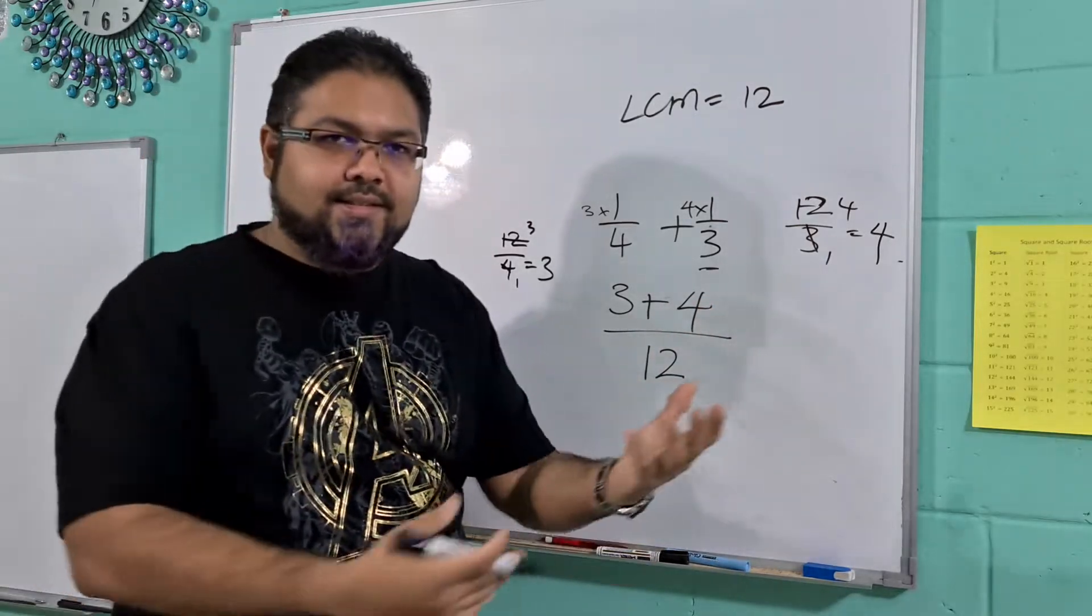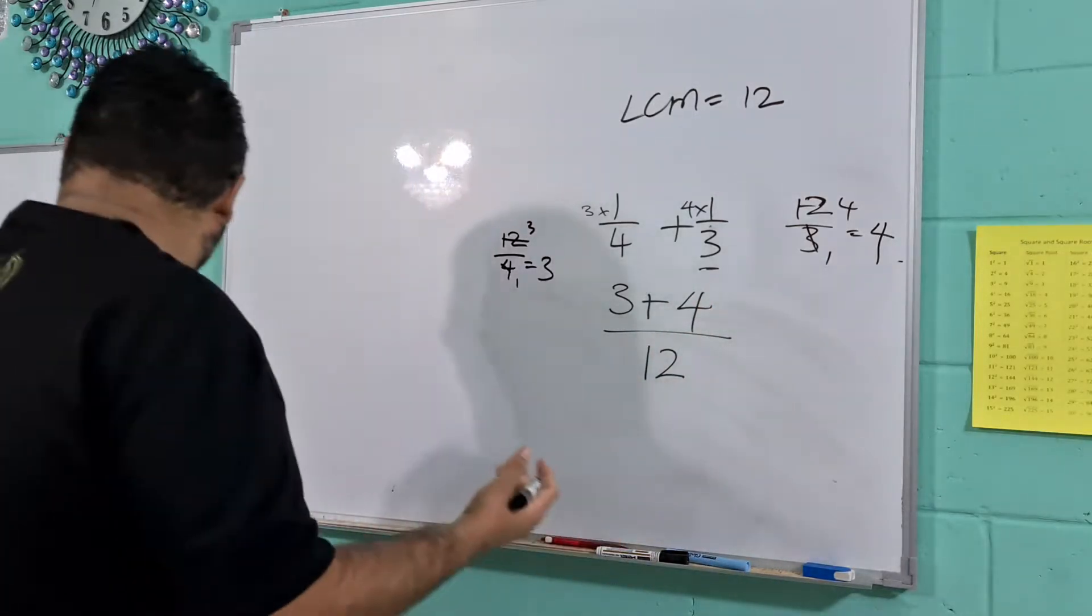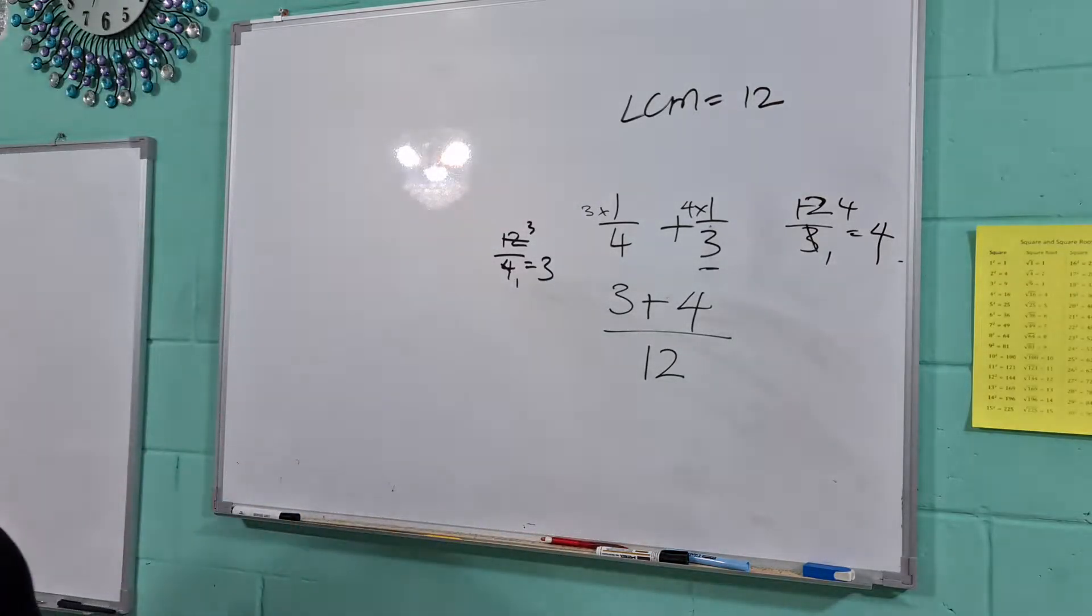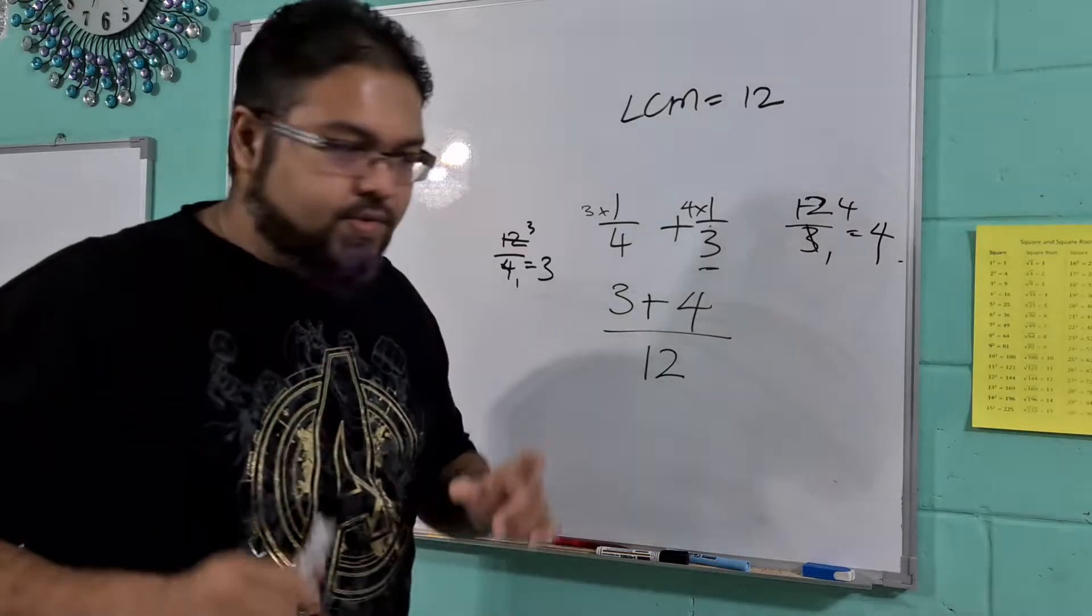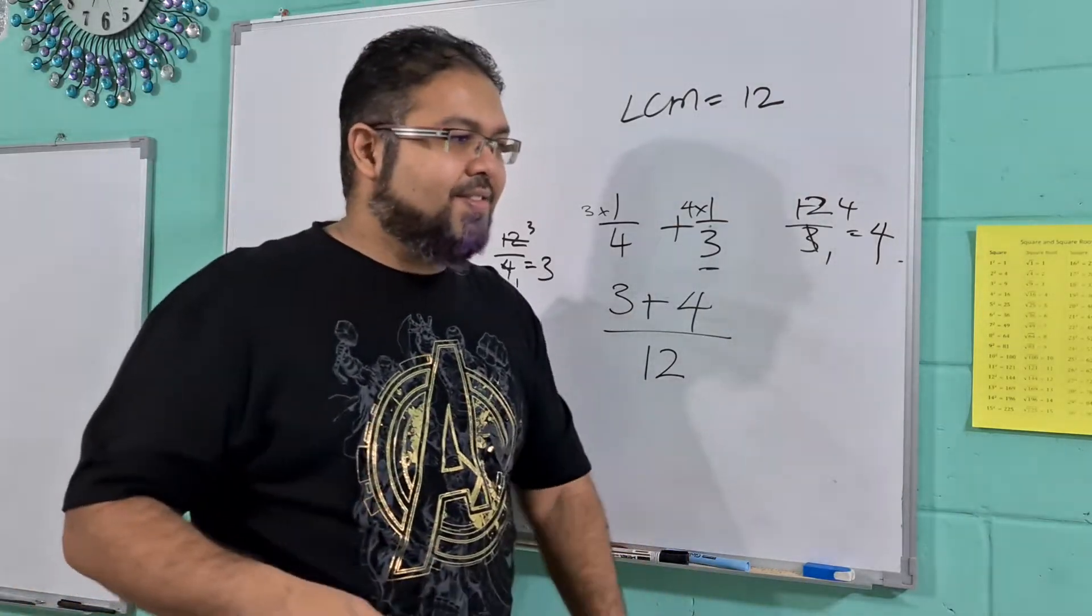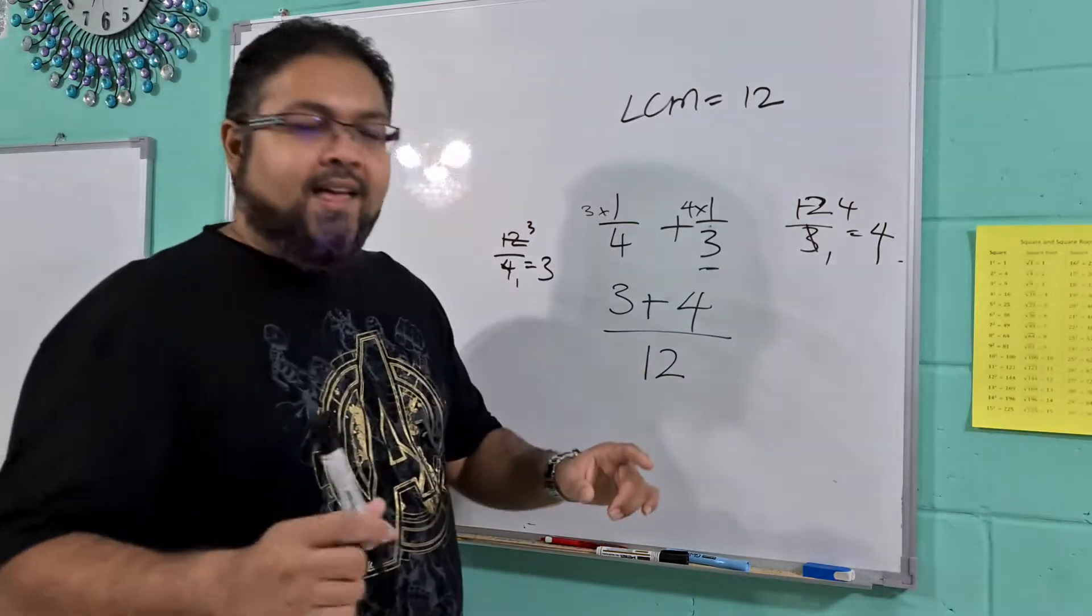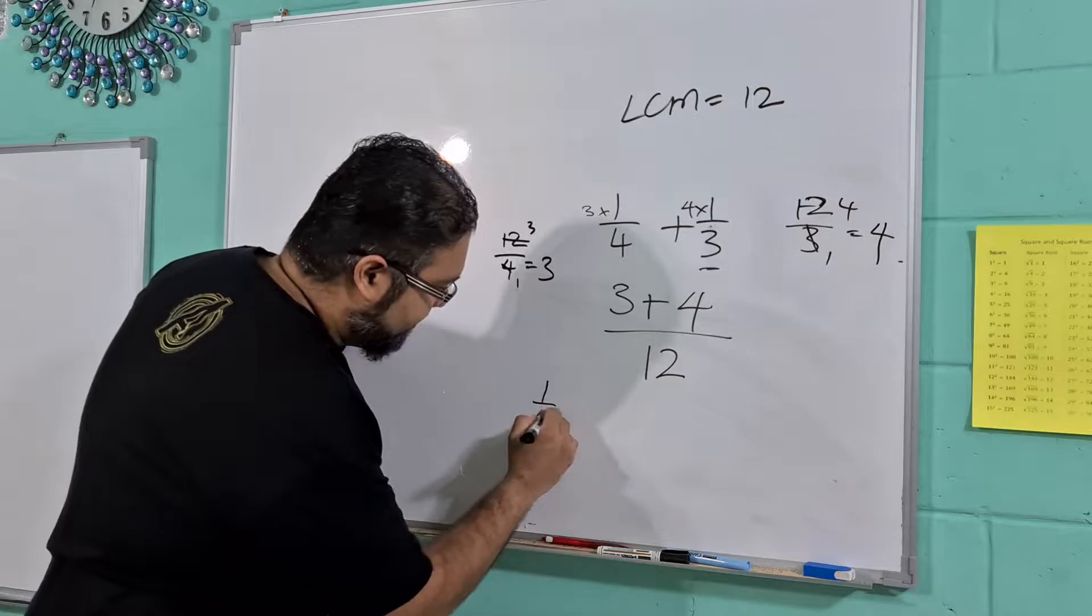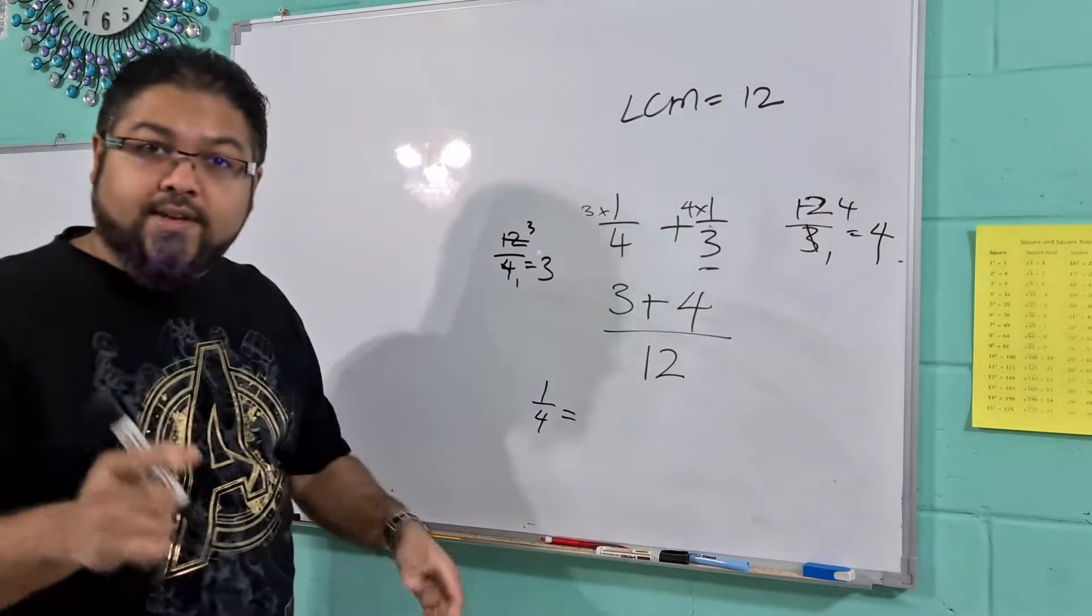So guys, look at it. This is like super awesome. Do I have a different color marker? Okay, I do not have a different color marker but I will get one for the next video. I'll do that after. So essentially what we have here is 1 over 4 is equivalent to,